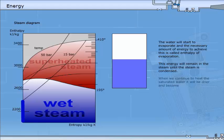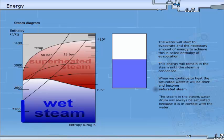When we continue to heat the saturated water, it will be drier and become saturated steam. The steam in the steam water drum will always be saturated, because it is in contact with water.